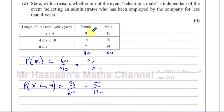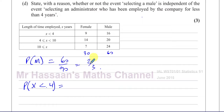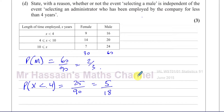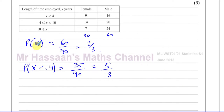So 25 over 90 — the total is 90, not 60. That simplifies by dividing by 5 to give 5 over 18. So the probability of being male is two thirds, and the probability of working there for less than four years is 5 over 18. Now, if A and B are independent, then P(A ∩ B) = P(A) × P(B).